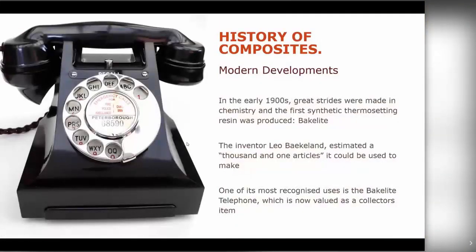These are all materials that humans could find in nature. What actually turned around the history of composites was the introduction of plastics as a reinforcement material. One of the key turning points was the introduction of Bakelite, which was used for old-fashioned phones like the one shown in the picture. That is effectively a thermosetting resin, one of the constituents that make up composites. This was a turning point enabling production of engineering plastics with known properties and standardized manufacturing processes.